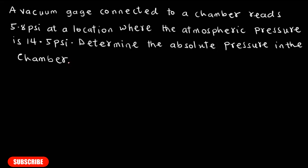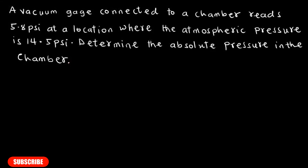In this lesson, we are going to solve this question on the screen. The question says that the vacuum gauge connected to a chamber reads 5.8 psi at a location where the atmospheric pressure is 14.5 psi. We have to determine the absolute pressure in the chamber, given the gauge pressure and the atmospheric pressure.